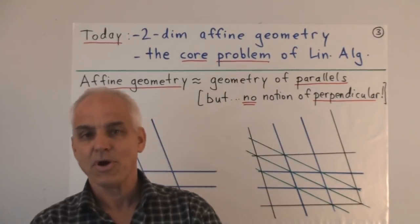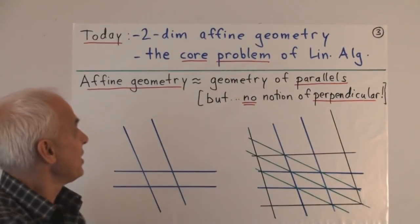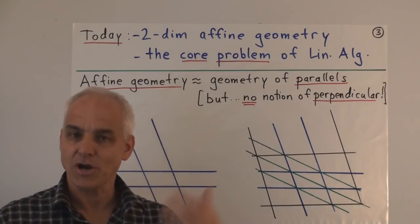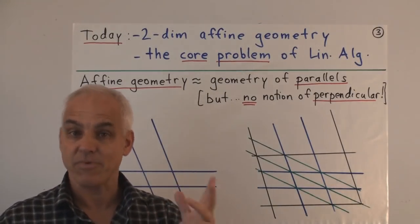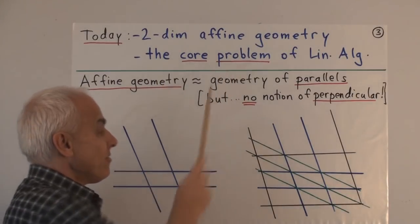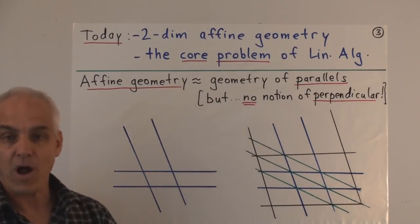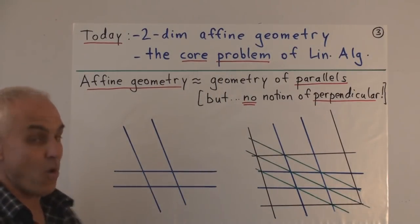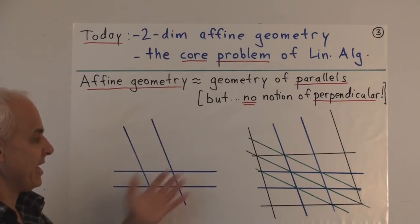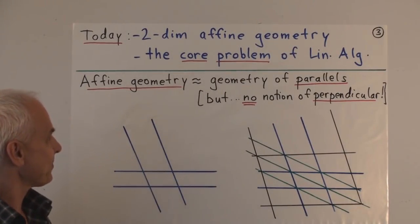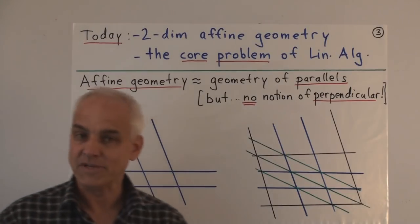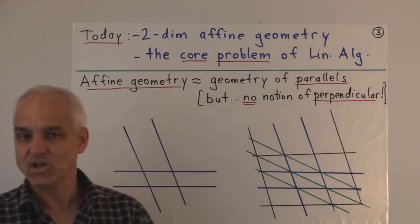What are we going to do today? Today we're going to introduce affine geometry in the two-dimensional situation, to start you thinking about this type of geometry. And we're going to illustrate the core problem of linear algebra — or at least one of the first core problems — in this two-dimensional setting. Can I explain, without going into a lot of details, what affine geometry is?